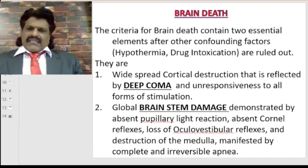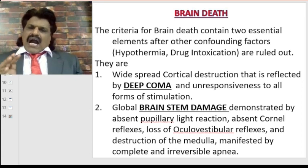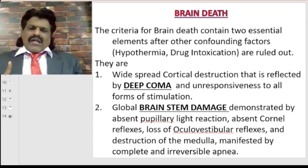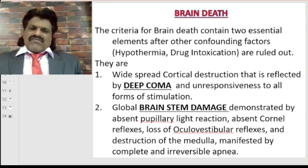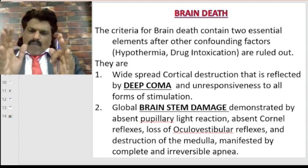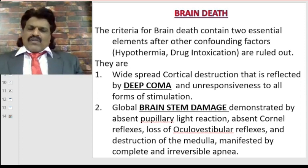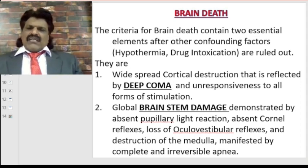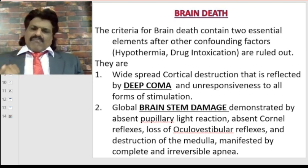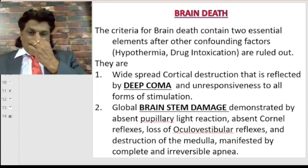The criteria for brain death contains two essential elements, after confounding factors like hypothermia and drug intoxication are ruled out. First, there is widespread cortical destruction reflected by deep coma and unresponsiveness to all forms of stimulation. Second, there is global brainstem damage demonstrated by absent pupillary light reaction, absent corneal reflexes, loss of ocular vestibular reflexes, and destruction of the medulla manifested by complete and irreversible apnea.